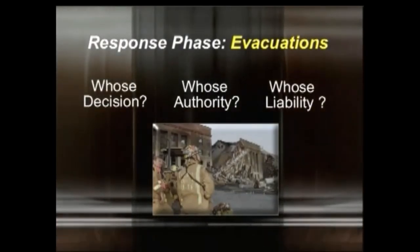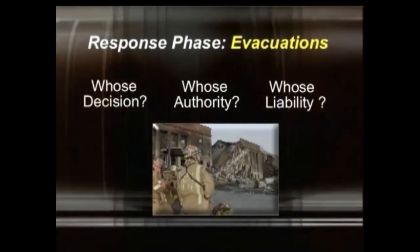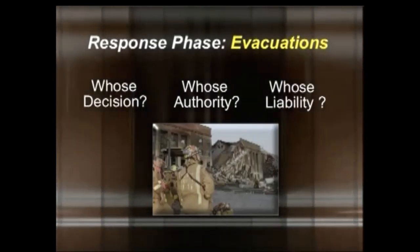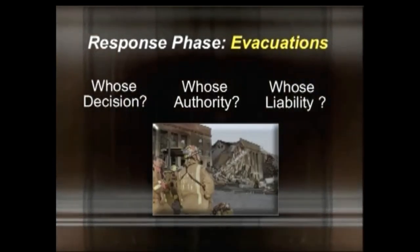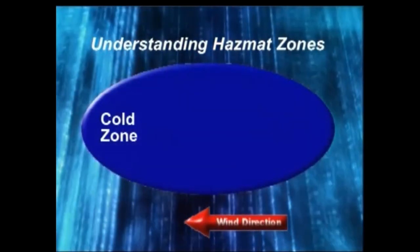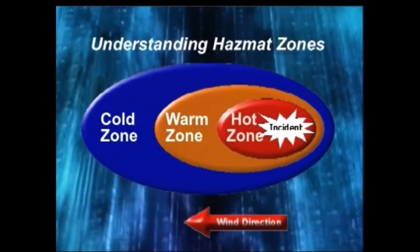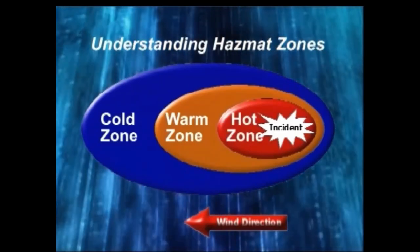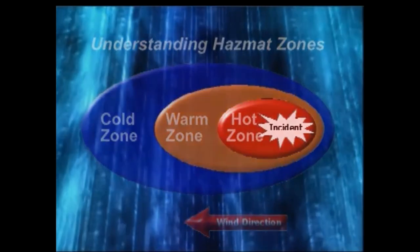The decision to shelter in place versus evacuation depends on accurate assessment of the situation and has many variables that must be considered. If the situation involves hazardous materials, you should first take careful note of the wind direction. You and other people who may be exposed will want to first move crosswind and then upwind to avoid exposure. In the case of an incident involving weapons of mass destruction, expect mass hysteria. The more order and calm reassurance you can provide, the better.